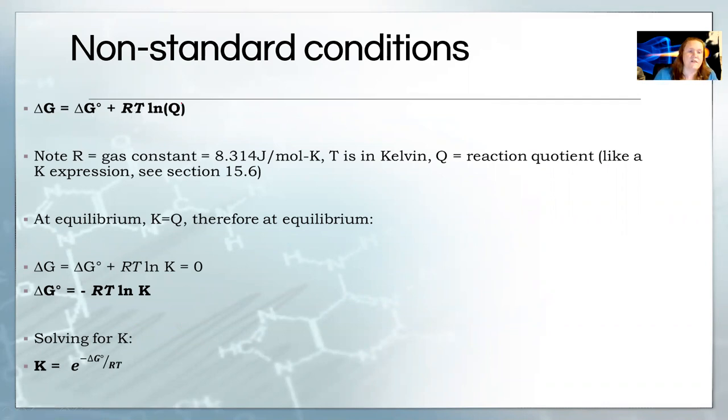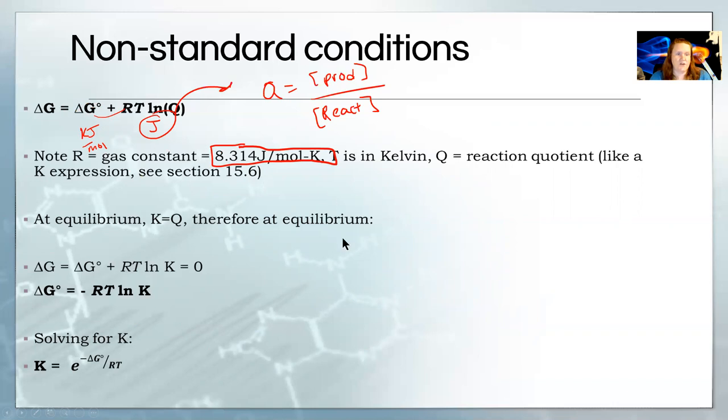And this Q is our friend from the equilibrium chapter. Remember, we defined it as products over reactants. And it doesn't have to be at equilibrium. It might be, but it doesn't have to be. So, it's not quite the same thing as K. So, whatever your conditions are, you can put in the temperature, the ideal gas constant, and whatever your ratio of products or reactants is. And you can figure out whether it's spontaneous in those exact conditions or not. It's important to notice that the gas constant you're using here is not the 0.08206. This is the one for energy. So, it's got to be in terms of joules because, you know, delta G is joules. We also have the situation here where this is kilojoules per mole. You're going to end up with joules over here. Fix it. Don't add two things that don't match.